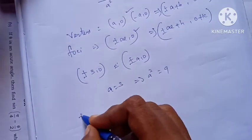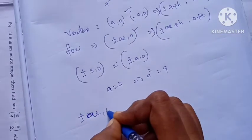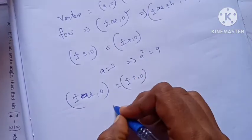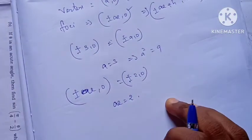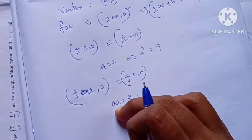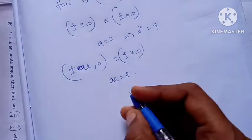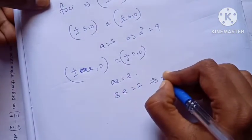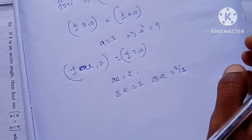Next, focus. Focus is plus or minus ae,0, that is plus or minus 2,0. So ae equals 2. Now we replace a: a is 3, so e equals 2 by 3.